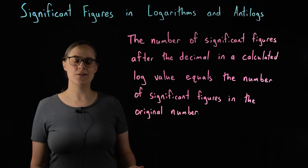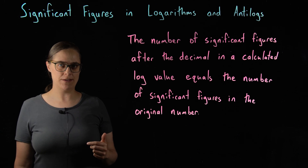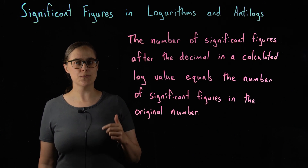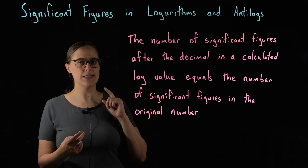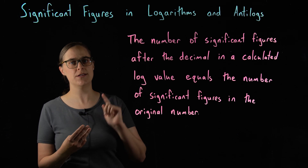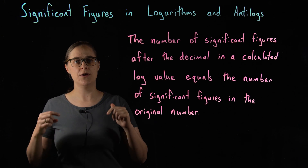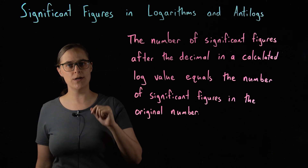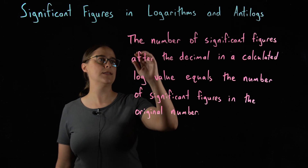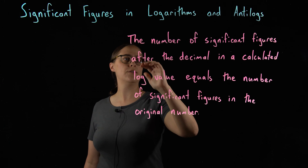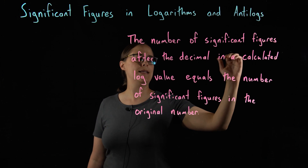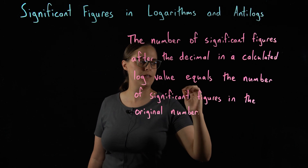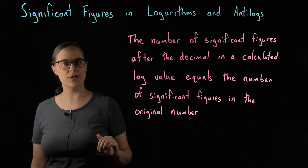The first thing you need to know is that there is a different significant figures rule for each mathematical operation. There is a rule for logs and antilogs, there's a rule for multiplication and division, and there is a rule for addition and subtraction. Right now I am only talking about logarithms and antilogs, and our one and only rule is: the number of significant figures after the decimal in a calculated log value equals the number of significant figures in the original number.